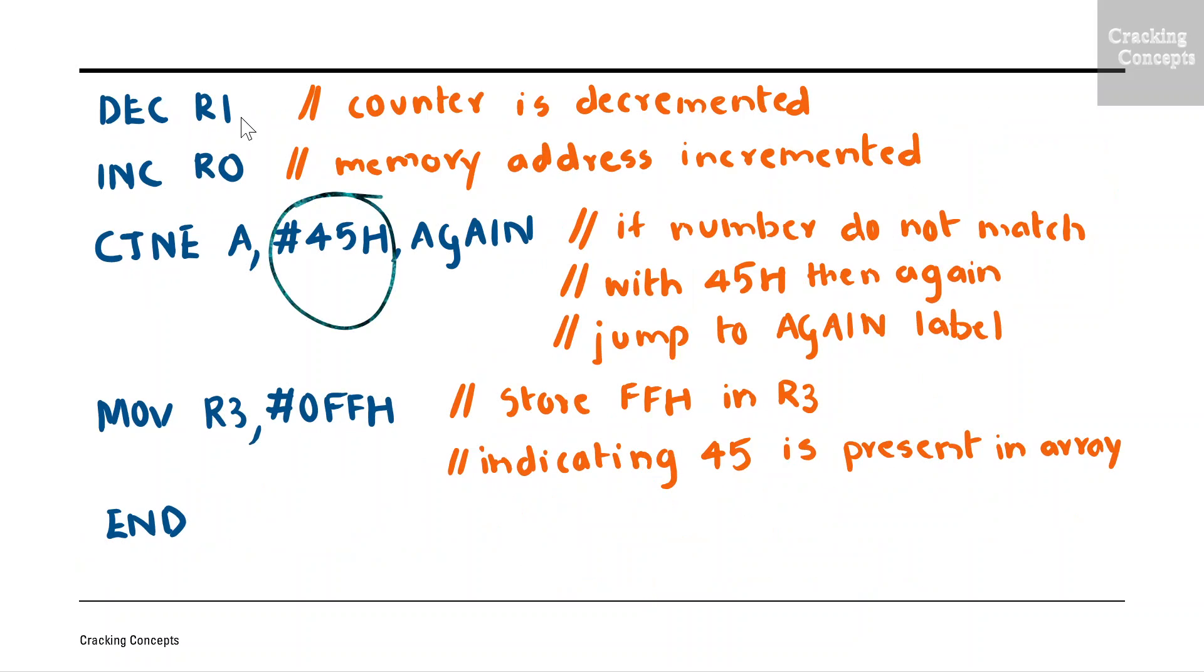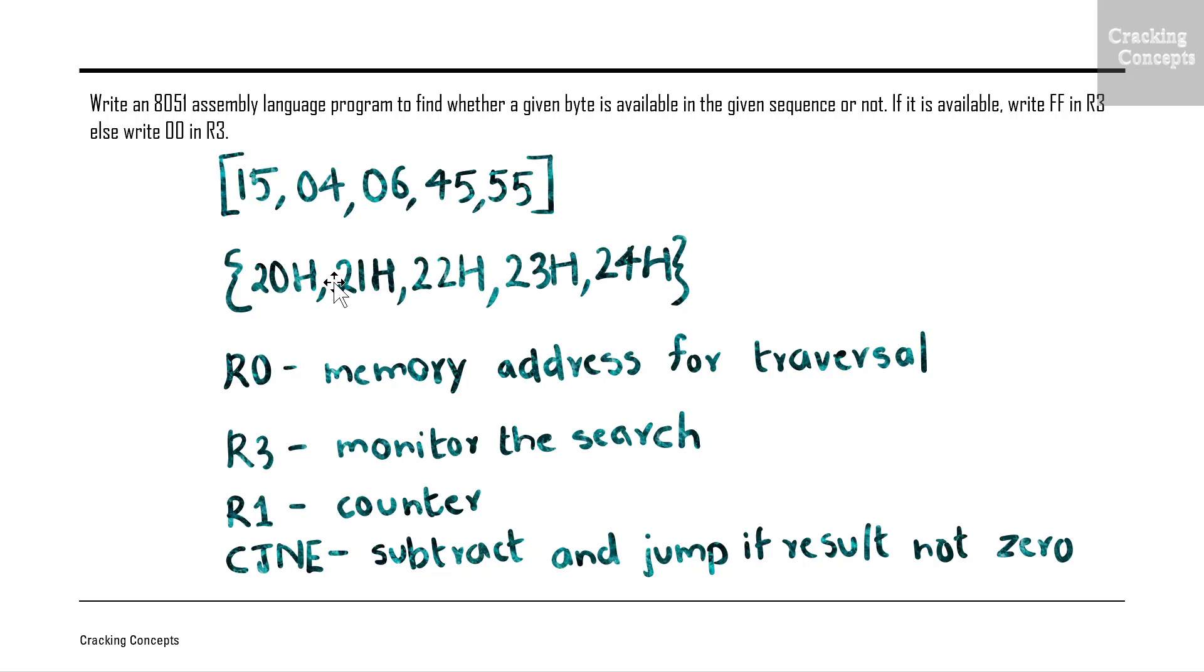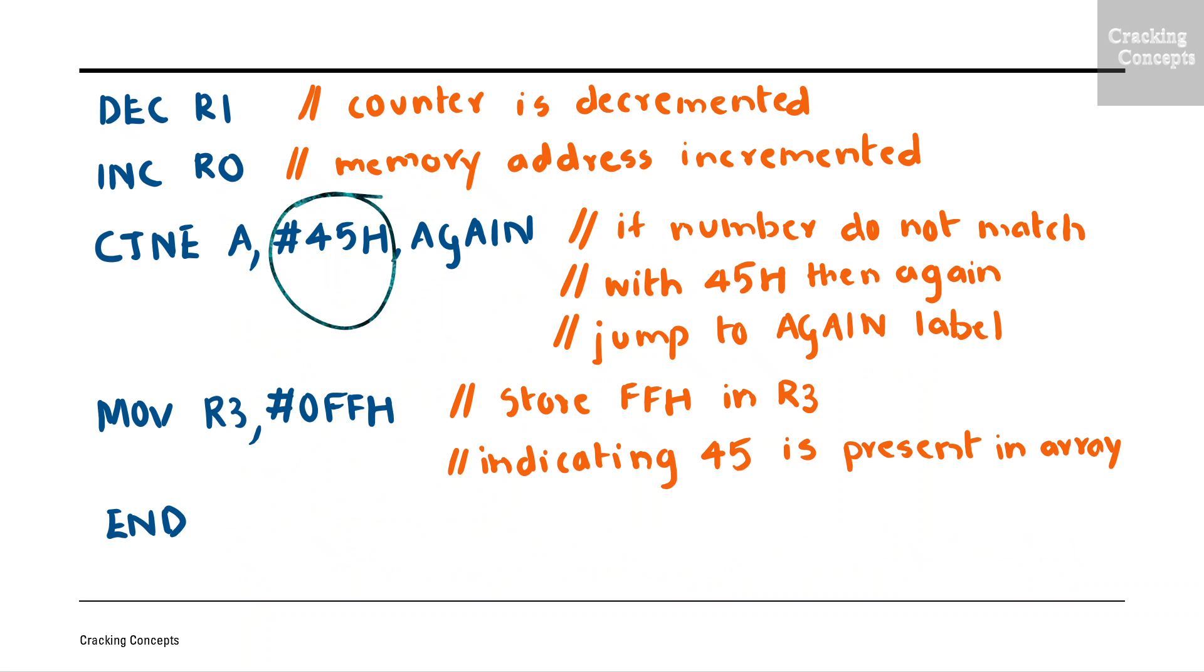Next the value of R1 is decremented. So R1 is a counter, it was initialized to 5, and on decrementing its value will be 4. R0 will be incremented, so now R0 will point to 21H. Next we will perform the comparison. A subtraction will be performed between the accumulator and the value to be searched for. In this question we will assume that 45H is the value to be searched for. A subtraction will be performed between 45 and the value at A which is 15. So that doesn't give us zero. Now the jump will be performed and the control will be transferred to the label AGAIN.